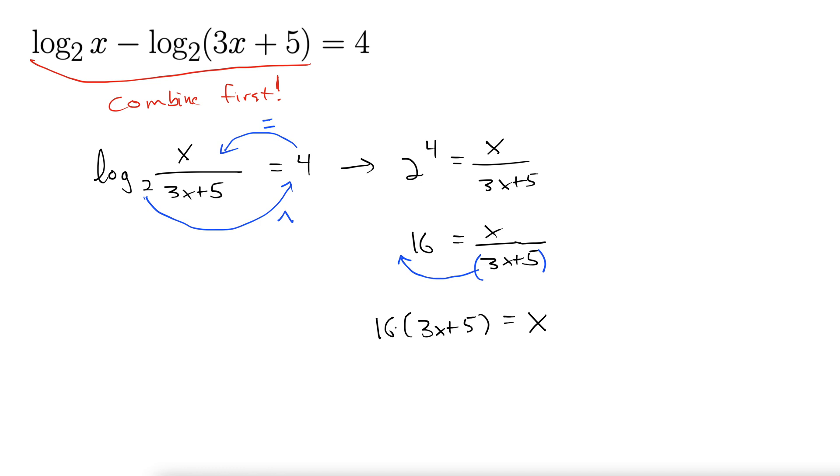Okay, so let's distribute this 16 and then get all the x's on one side, everything else on the other. Let's see, 16 times 3 is 48x plus 16 times 5, 80 equals x. Subtract off the x. That gives us 47x. You can subtract off the 80 as well. Equals negative 80. This is starting to look pretty strange. x equals negative 80 over 47.